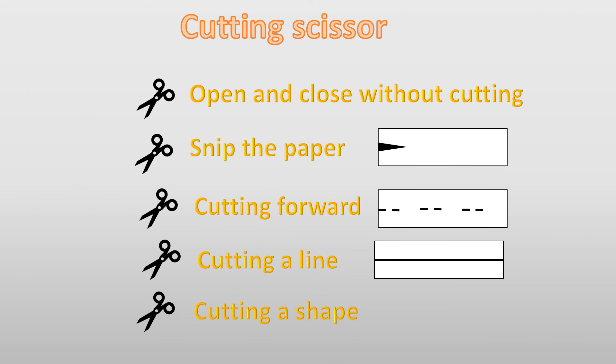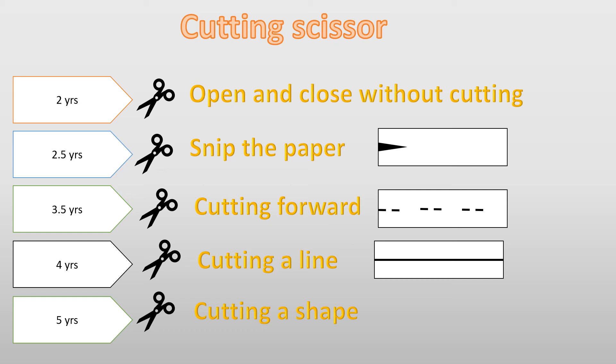Moving to the third C, the cutting scissor. For the cutting scissor it is also easy. If he can only open and close without cutting, two years. Snip the paper a little bit, two and a half. Cutting forward on multiple occasions, he will be three and a half. Cutting a proper line on a paper, four years. Cutting a shape like heart or star, it is a complex job, so he will be five years. This is for the cutting. We have finished from the fine motor regarding the C.